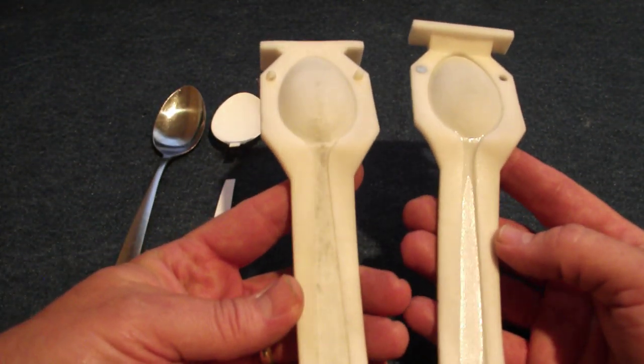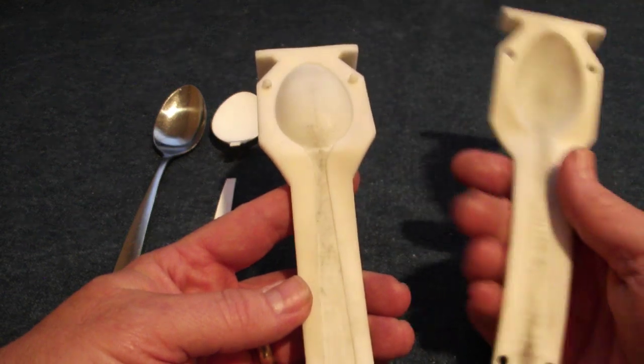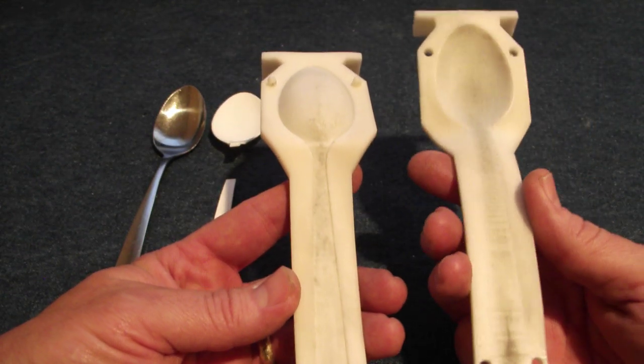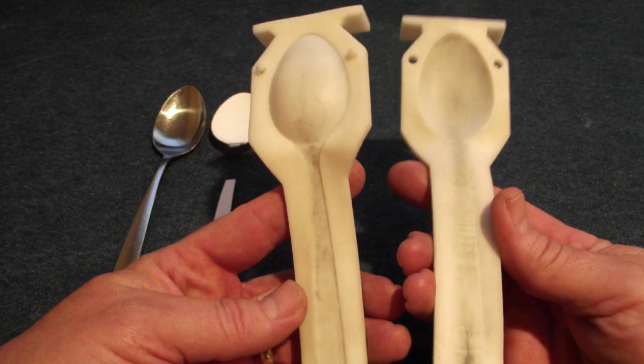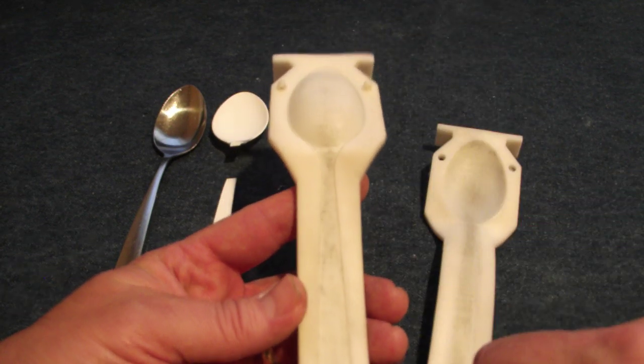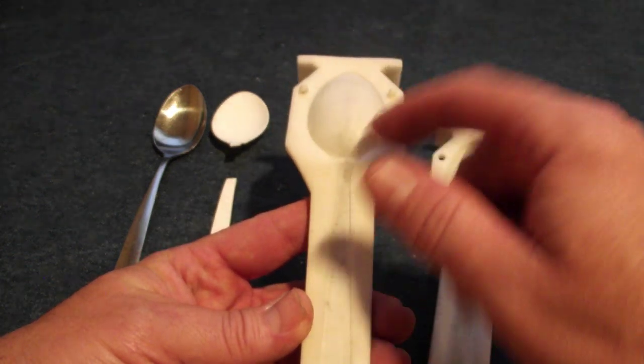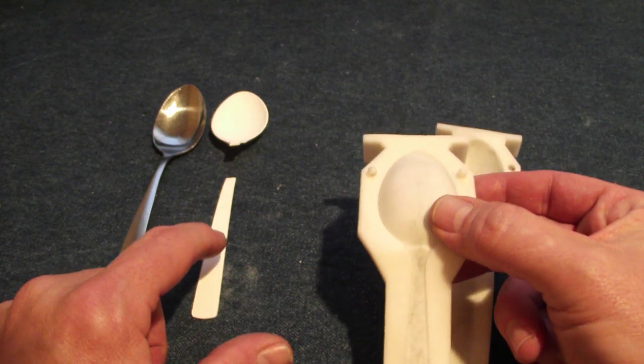This is the upper and lower portion, lower and upper portion of the same spoon. And what we've done, this side has a recess so it's only 40 thousandths deep. It's the thickness of the 3D print you see here.